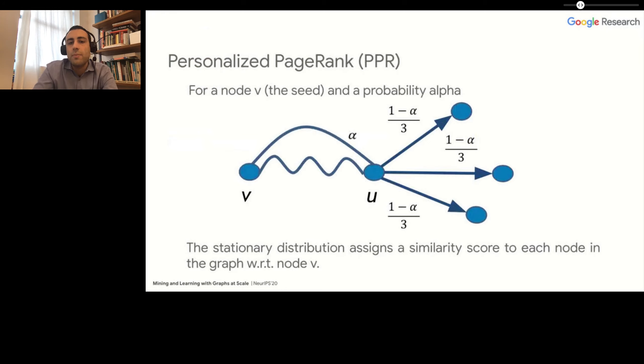The personalized PageRank, or PPR, of a given node V, known as the seed, is defined as the following stochastic process stationary distribution. The stochastic process starts in node V, and at each step of the random walk, with probability alpha we jump back to node V, and with probability one minus alpha we visit a uniform at random neighbor of the current node.